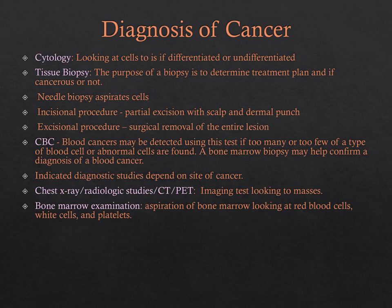A diagnosis of cancer is made through in-depth testing, looking at cytology of the cancer cells — whether they are differentiated, meaning they look similar to the original cells, or undifferentiated, meaning they look nothing like the original tissue, which is not a good sign. We can biopsy cells via needle aspiration, excision of a mole or skin lesion, run blood tests for blood cancers like leukemias, and use imaging such as X-rays, CTs, MRIs, and PET scans.